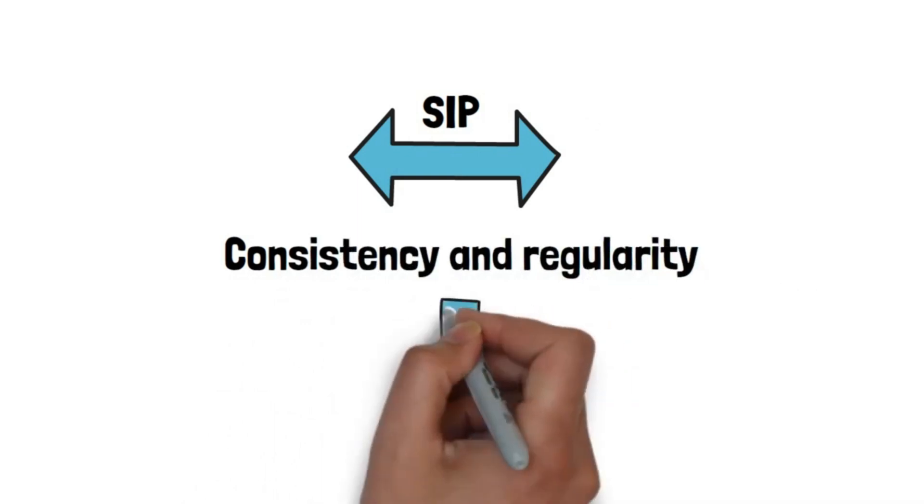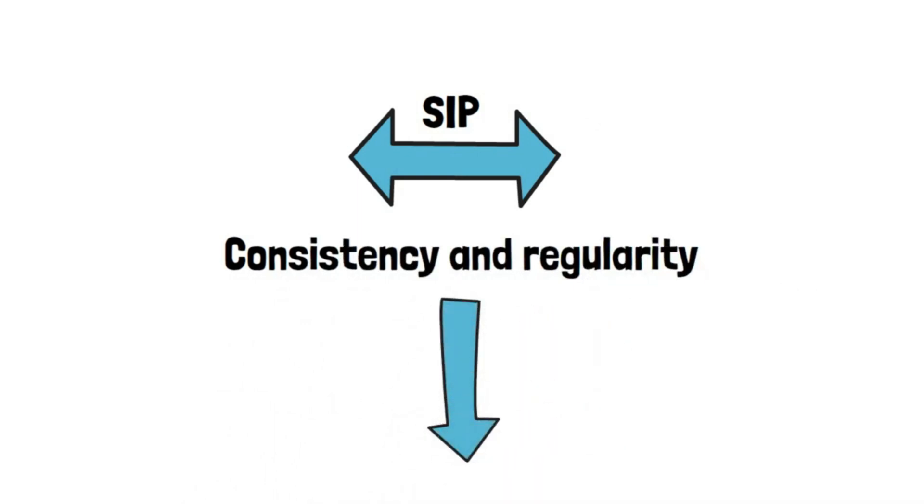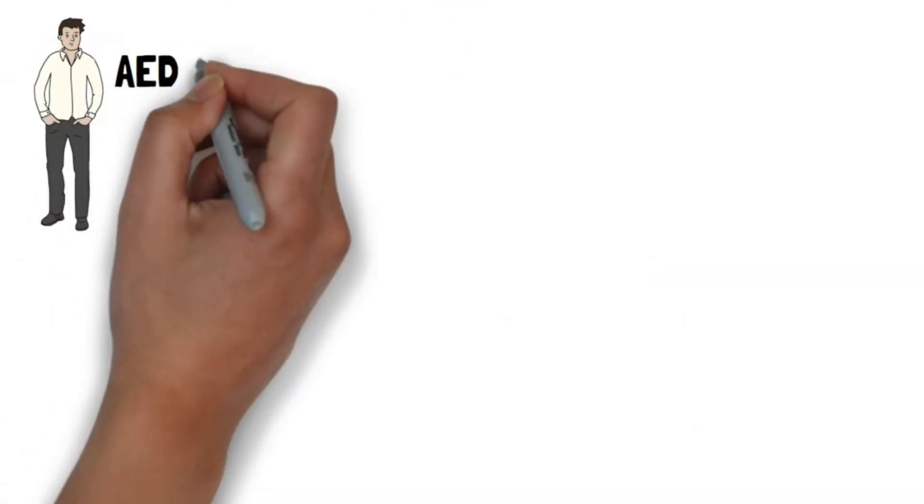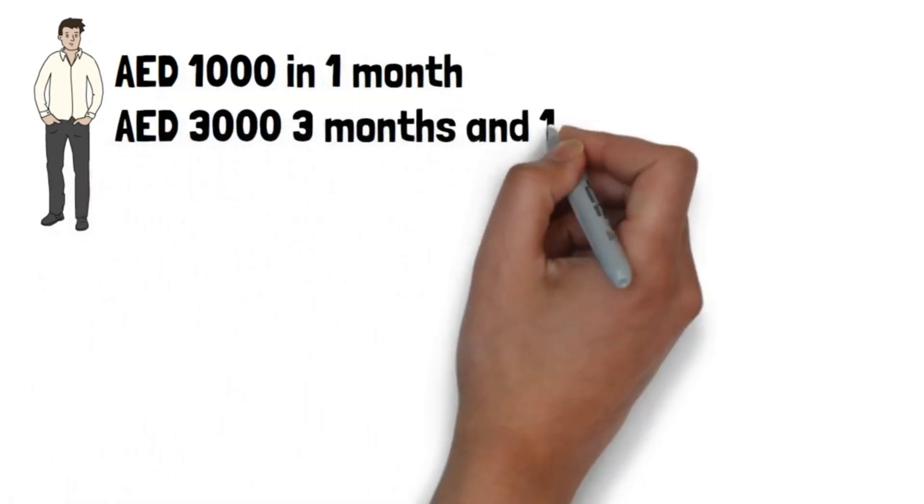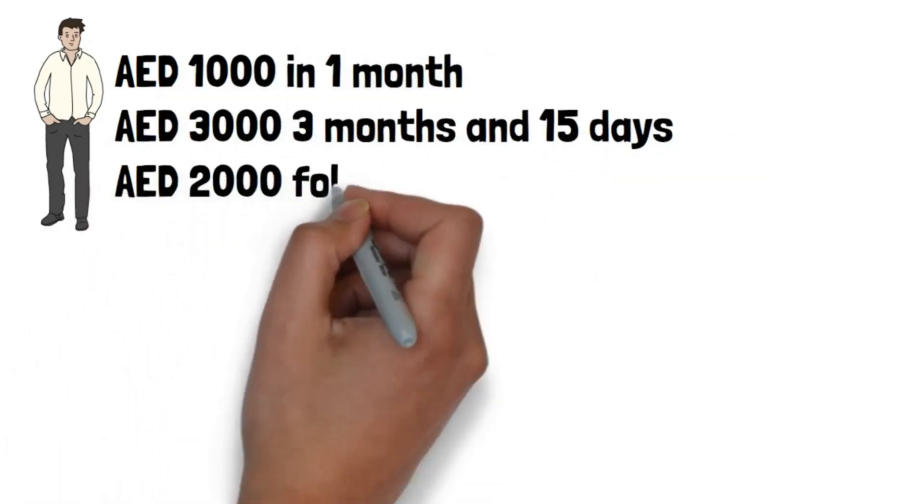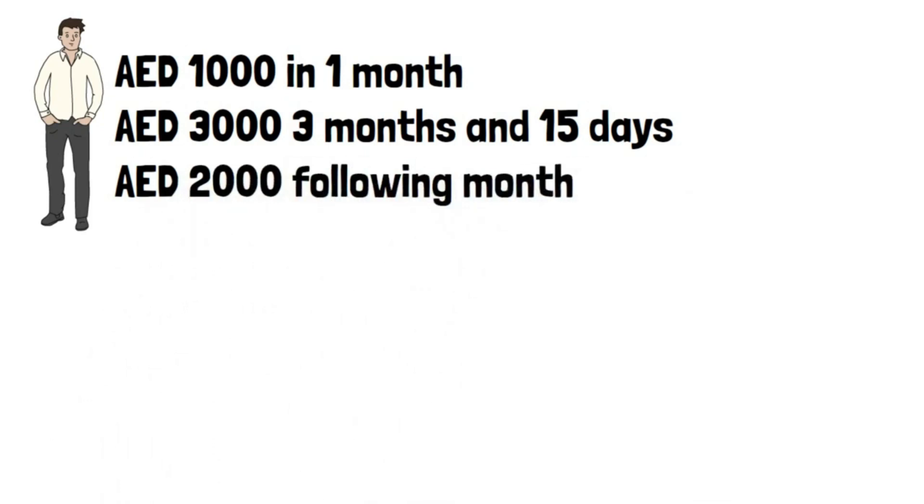To emphasize the significance of these two factors, consider the following instances. If Mr. James invests AED 1000 in one month, then AED 3003 months and 15 days later, and then another AED 2000 the following month, his actions do not qualify as a SIP.